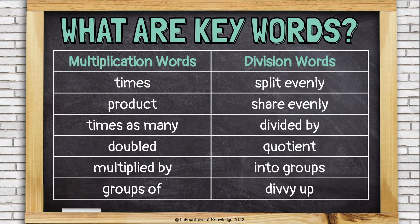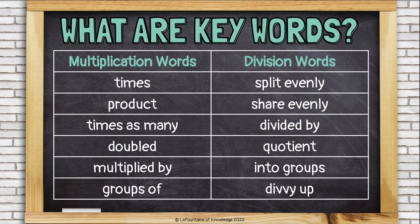Here are some keywords that might suggest you need to multiply or divide. Multiplication keywords include: times, product, times as many, doubled, multiplied by, or groups of.